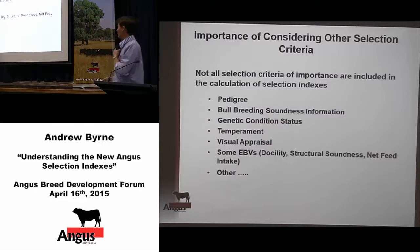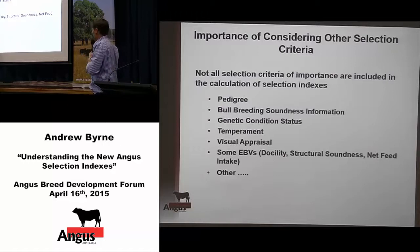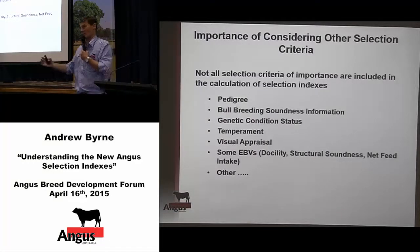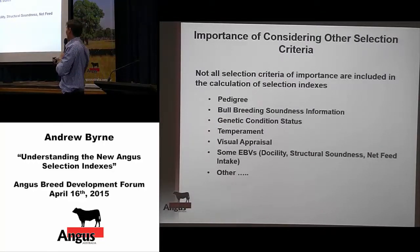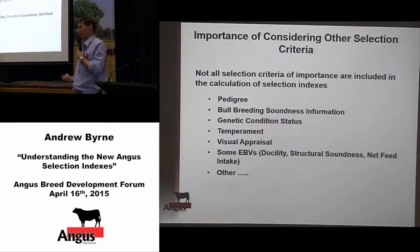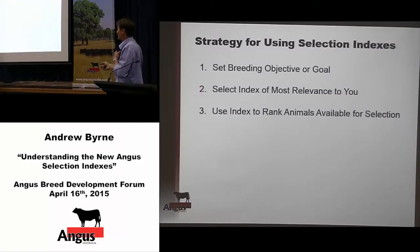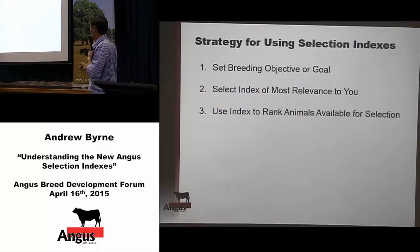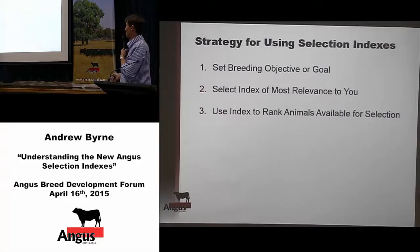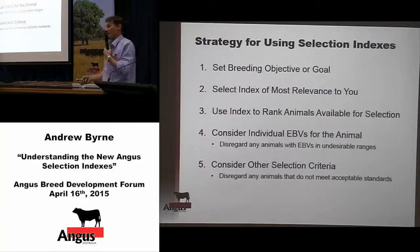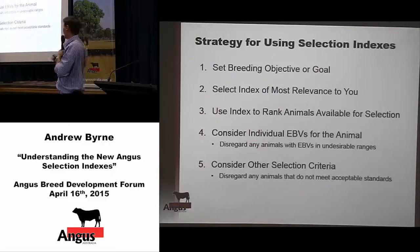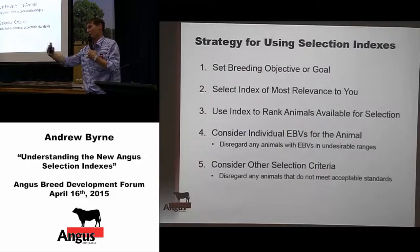The indexes don't express everything — they should never be considered to cover all the traits which are important to you when you make a selection decision. Using the indexes in association with other criteria is the recommended way forward. The possible approach: identify the index of most relevance to you based on your breeding goals, use that index to rank animals, then disregard any animals with individual EBVs in undesirable ranges and any animals not hitting your other selection criteria. That leaves you with animals with the right trait package that also hit all the other boxes and are most suitable for use within your breeding program.